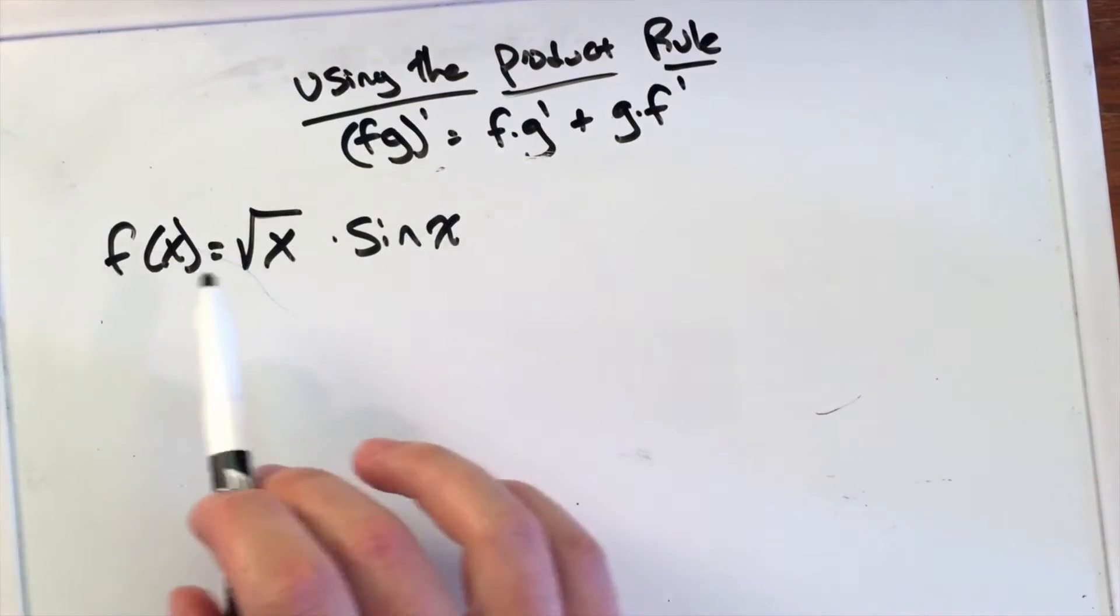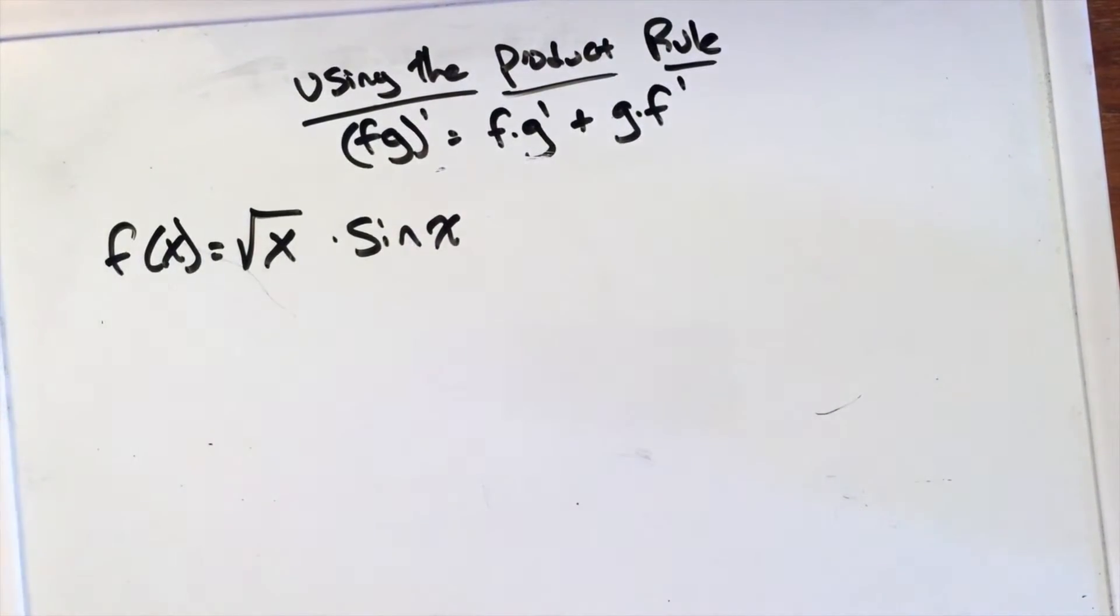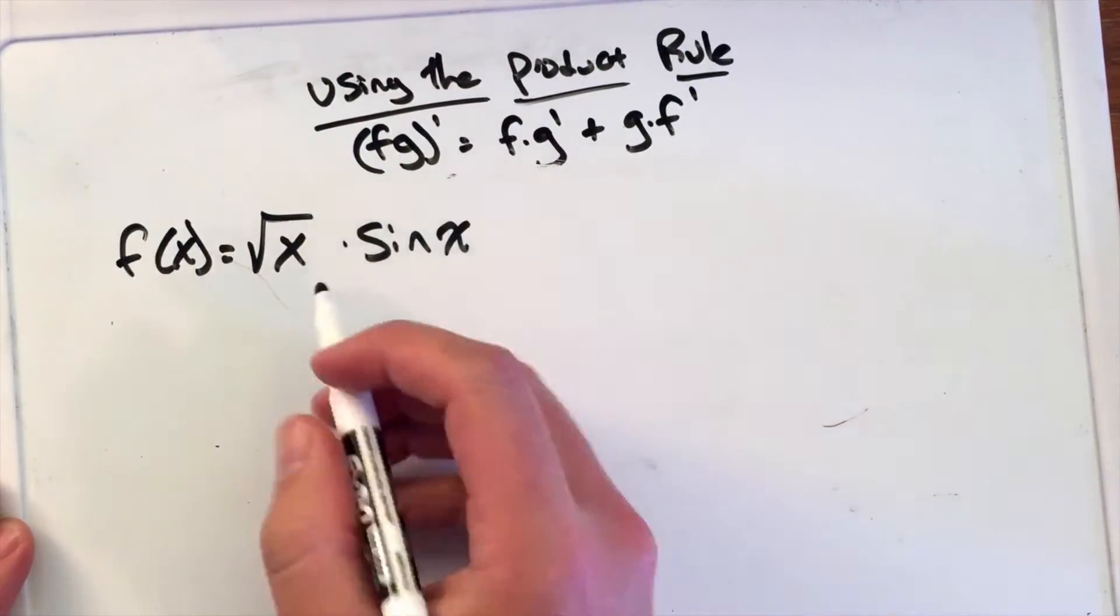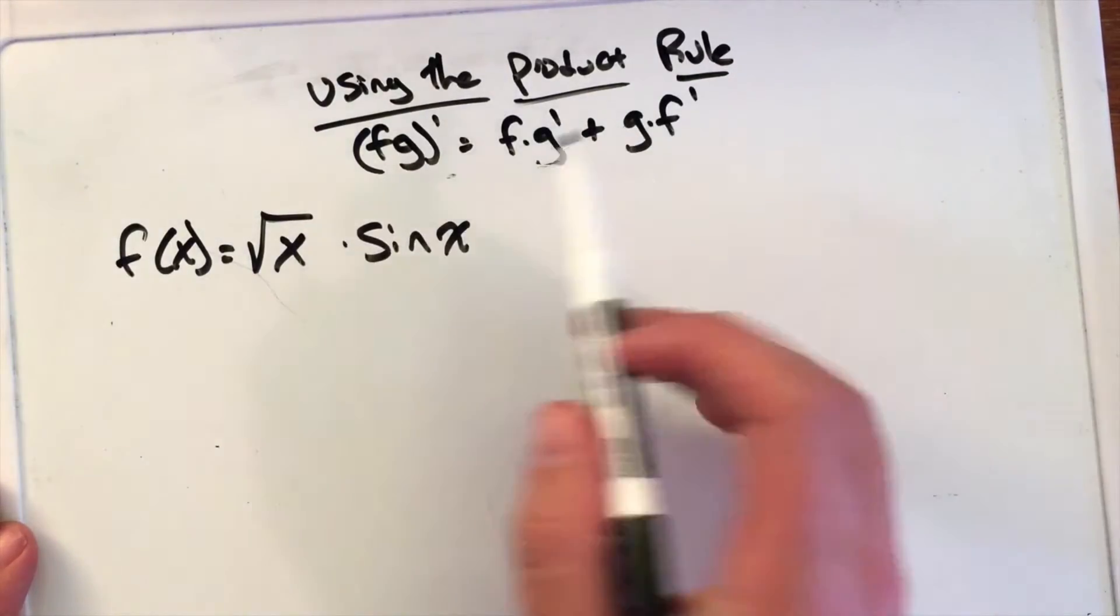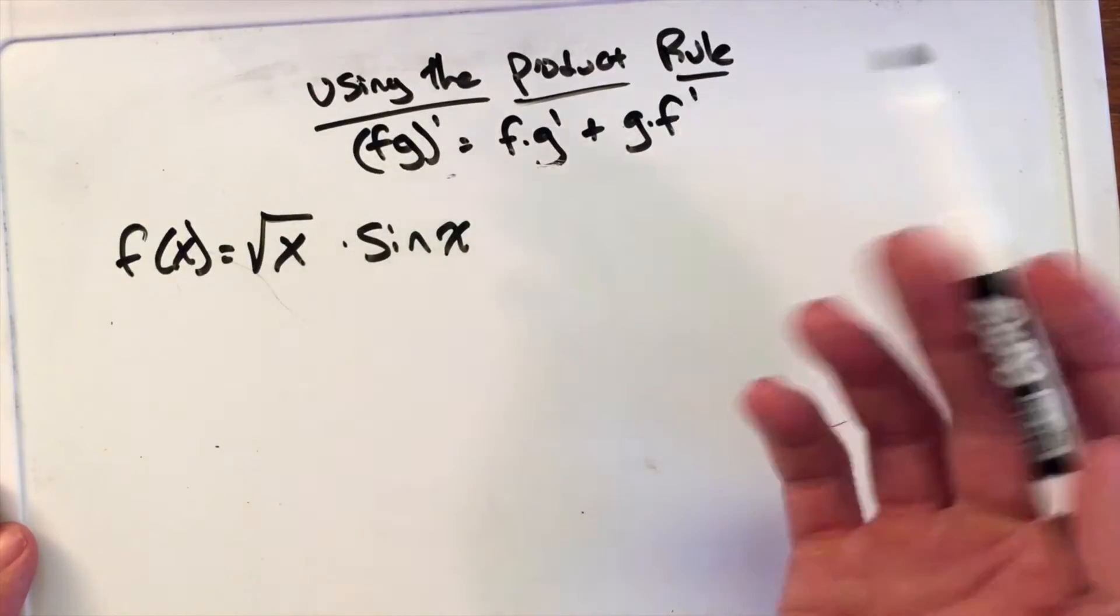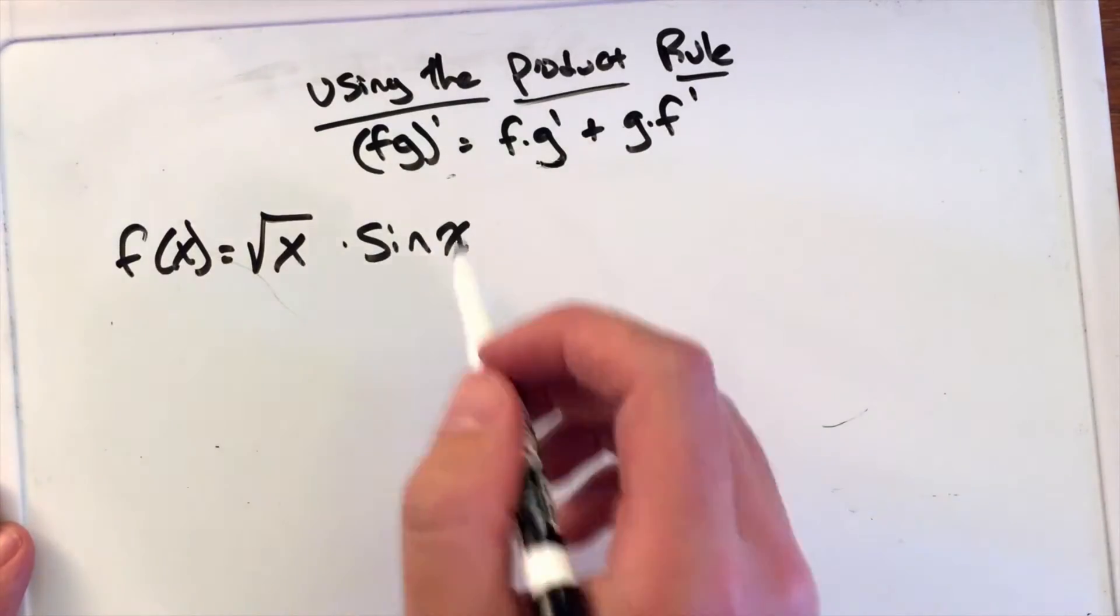Here we want to derive the function √x · sin(x), and we're going to use the product rule. Our function is labeled as f(x). Sometimes you'll see a different letter, but we're going to break it down into parts.